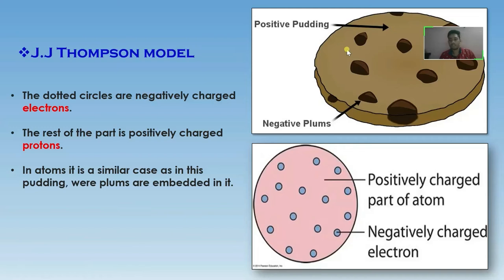The dotted circles are negatively charged electrons. The rest of the part is positively charged protons. In atoms, it is a similar case as in this pudding, where plums are embedded in it.